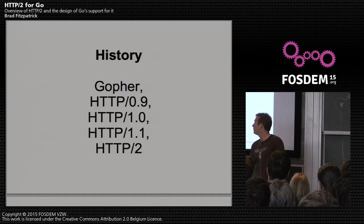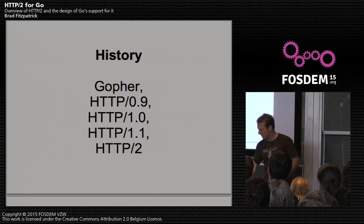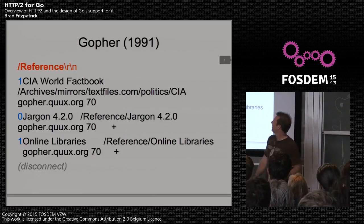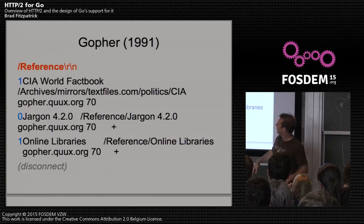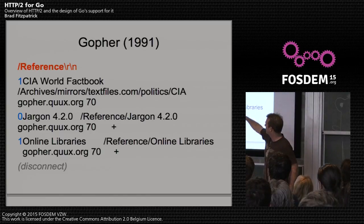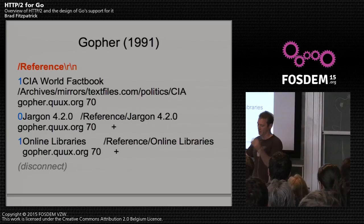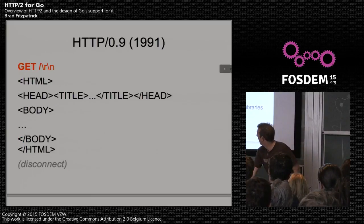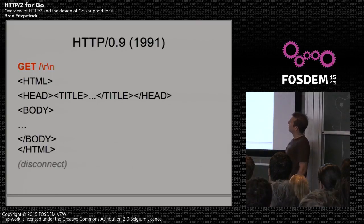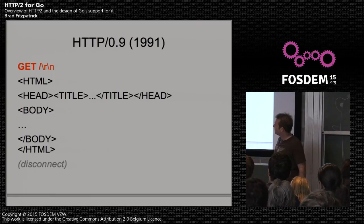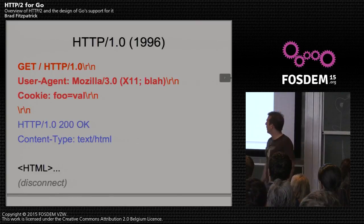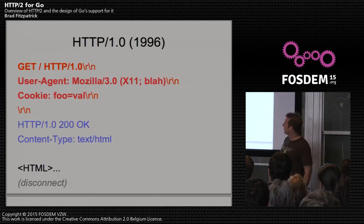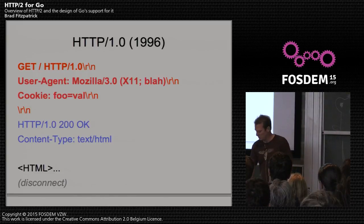HTTP2 — a little history of typing something in and getting a document back on the internet. I'll start with Gopher. The protocol looked like this: the red part was what your browser sent, the response was lists of text with columns, and the little one and zero were basically the content type — whether it was a text document, another listing, or an audio file. Then HTTP 0.9, around '91, you basically just sent one line. There were no content types; everything was HTML. HTTP 1.0 started adding headers — key-value pairs on requests and responses — and you had different content types.